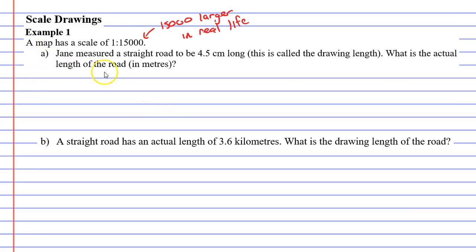So in question A, it says that Jane measured a straight road to be 4.5 centimeters long. This is called the drawing length, because you've actually measured it or drawn it on the map. It then says what is the actual length of the road, how large is it in real life, and they want you to give this in meters.